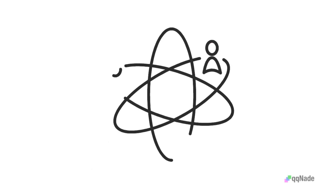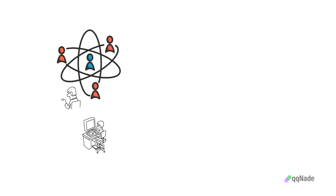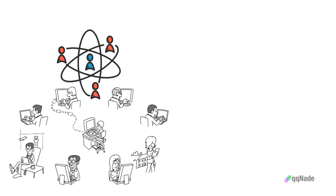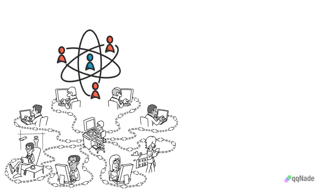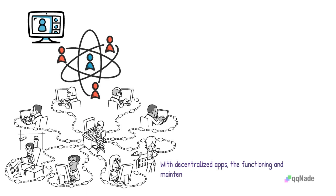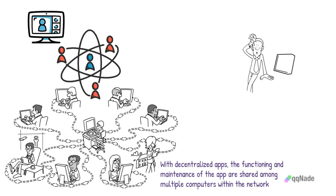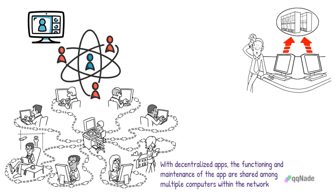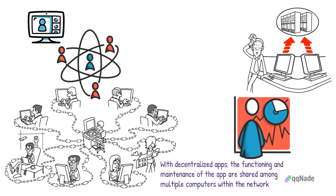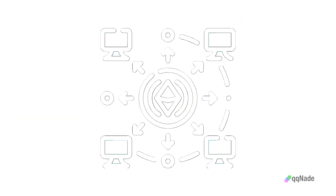A decentralized app is just like any other app. The major difference is that decentralized apps run on a peer-to-peer network of computer servers, and most are built on blockchain networks. Regular apps are controlled by a single computer. With decentralized apps, the functioning and maintenance of the app are shared among multiple computers within the network. When a developer creates a regular app, they retain control of how it functions. With decentralized apps, once the app is released, the developer loses control. This means other developers can build on the dApp's codebase without needing permission, since blockchains are open-source and peer-to-peer.